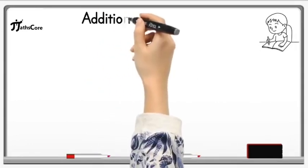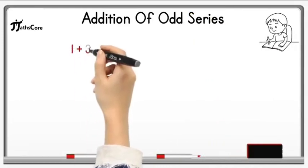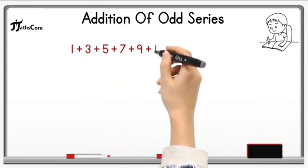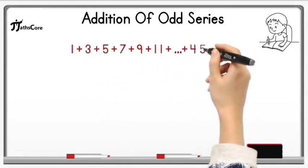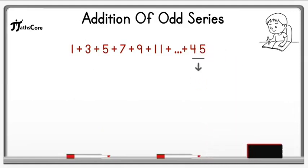Let's solve next example on addition of odd series. Example is 1 plus 3 plus 5 plus 7 plus up to 45. So the last number of this odd series is 45.